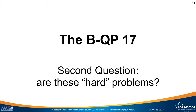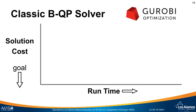The second question is: are these 17 cases interesting? Are they hard problems? It could be the case that by doing this filtering we've reduced the QPLib to just a small collection of easy problems. To answer this, we need to understand a little bit about how a classic optimization tool like Gurobi works. In this plot, we have runtime on the x-axis and solution cost on the y-axis. Our goal is to make the solution cost as small as possible.